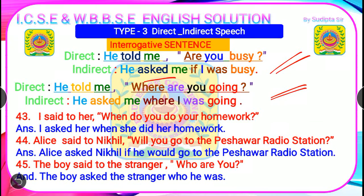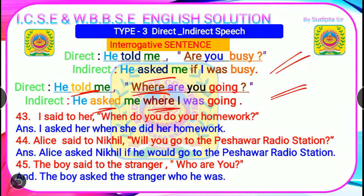For a wh-question: 'He told me, where are you going?' 'Where' is a wh-word, so it is a wh-question. 'Told' → 'asked': 'He asked me.' We use 'where' as the linker. 'You' → 'I.' 'Are going' → 'was going.' Final answer: 'He asked me where I was going.' Remember: in indirect speech, write the whole answer in the format of an assertive sentence — maintain the subject-verb pattern.